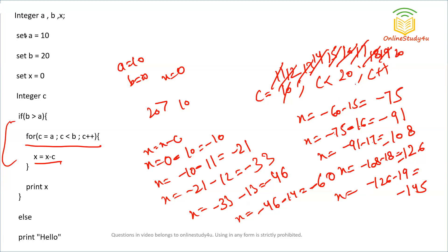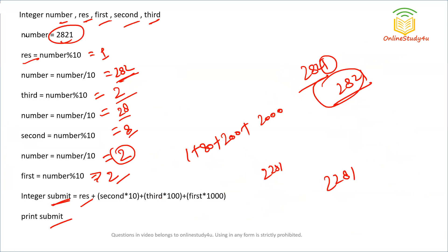When c becomes 20, the condition 20 less than 20 is false, so we exit the loop. The else part is not executed since the if condition was true. So x equals minus 145 is the correct answer for this question. These were the questions asked in today's Infosys slot. The video was to give you insight into the difficulty level of Infosys questions — they involve computation but are overall easy. Thank you for watching, keep learning, keep preparing!